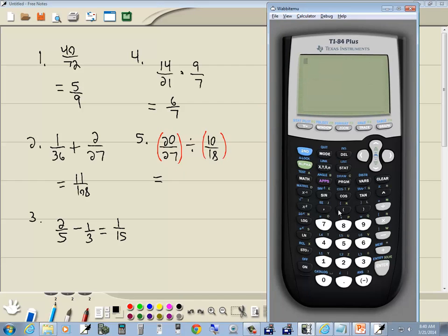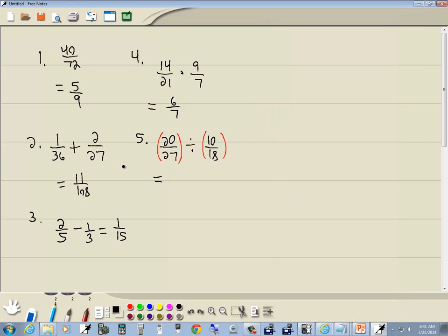So do a clear. If I do a beginning parenthesis, 20 divided by 27, closing parenthesis, divided by beginning parenthesis, 10 divided by 18, closing parenthesis, enter. And then I'll do a math, enter, enter, and change it to a fraction. So that gives us four thirds.